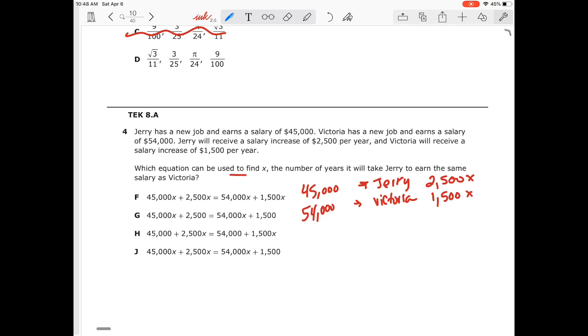And we want to know what equation will be used to find X, the number of years it will take Jerry to earn the same amount as Victoria. So we'd set these equations equal to each other. So I'm going to look at which ones. F is going to be eliminated because it has everything having variables. And G is going to be eliminated because it has the variable with the initial salary. That's the set amount of 45,054. So G is going to be eliminated.